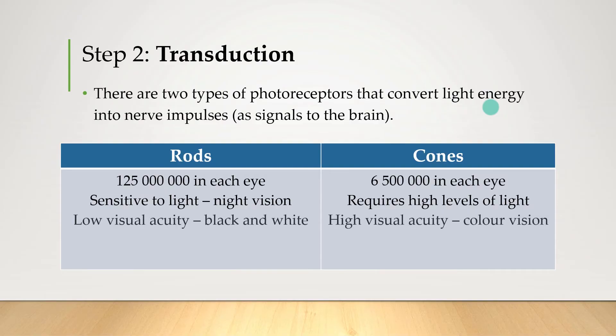Rods also have low visual acuity, or low detail, and they also only really convey black and white information to the brain, or grey. Cones, on the other hand, transmit high levels of detail in terms of what they're seeing to the brain, and also tell the brain information to do with color.